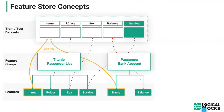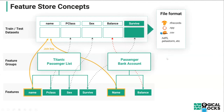The data scientist says: I want to join all these features — the Titanic passenger list and the bank account balance. The feature store will be smart enough to find the common join key — the name of the passengers. You can explicitly specify that yourself, but we have a query planner that will try to find it for you. Once done, the data scientist needs to decide what to do with this training/test dataset.